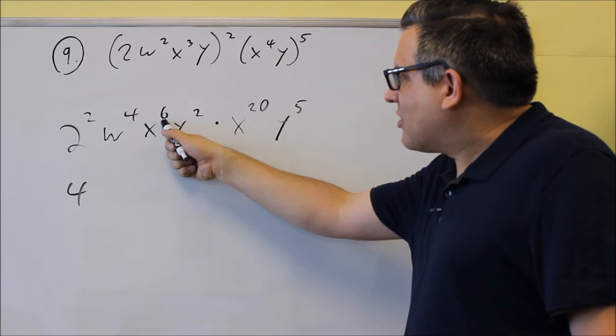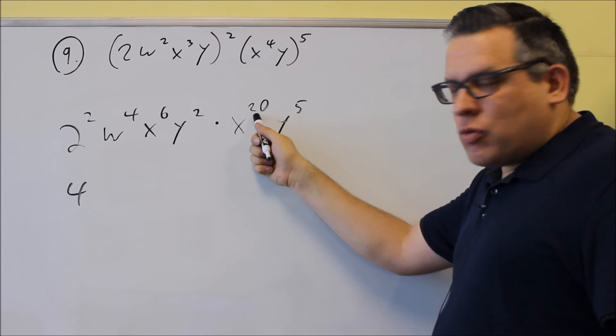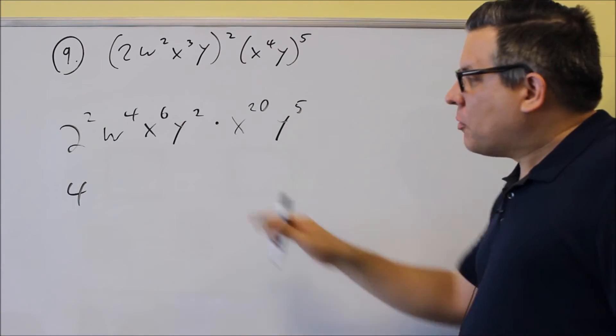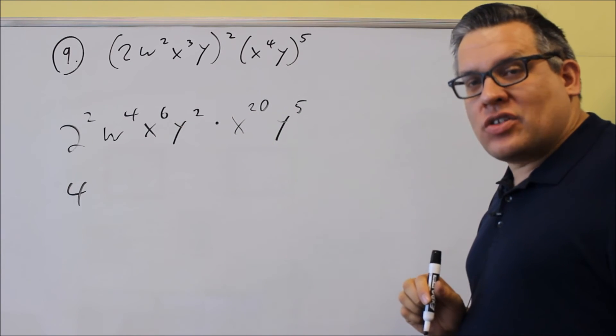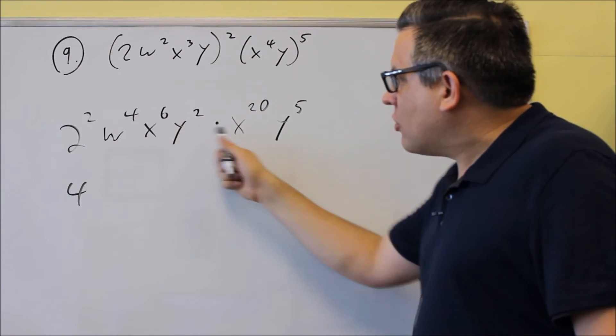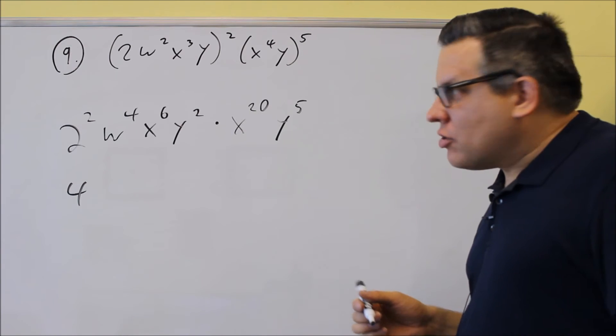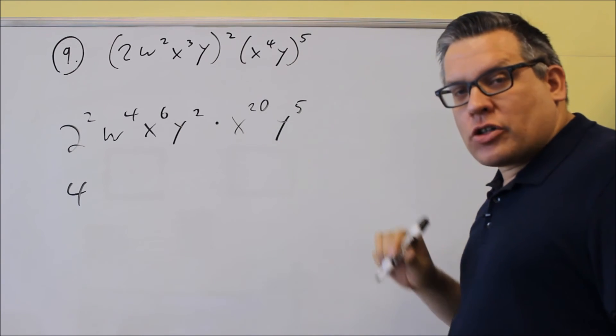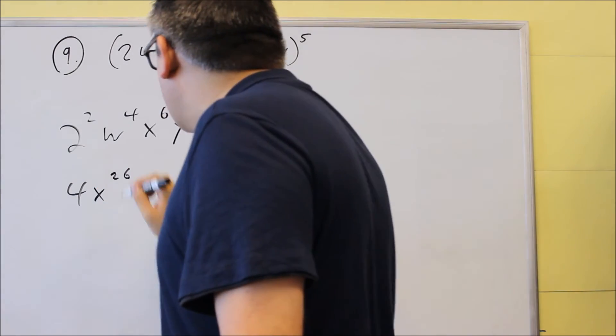Now, I have X to the sixth, and I have X to the twentieth. We're going to add those exponents together because we're really doing multiplication. Remember, multiplication, you're allowed to rearrange these in any order. So I can imagine the two X's right next to each other. And so when I have the same base, and I'm multiplying, I'm going to add the exponents. So I get X to the twenty-sixth.